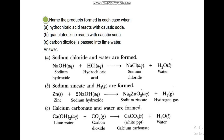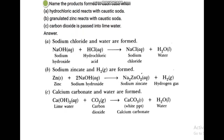When zinc reacts with NaOH, it gives Na2ZnO2 (sodium zincate) and hydrogen gas. Last one: when carbon dioxide is passed into lime water, calcium carbonate is formed. Calcium hydroxide (lime water) with CO2 gives CaCO3 — a white precipitate of calcium carbonate — plus water.